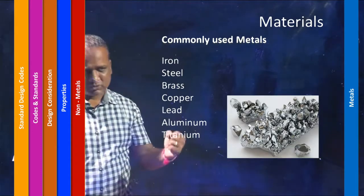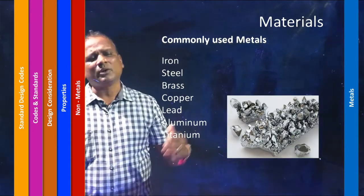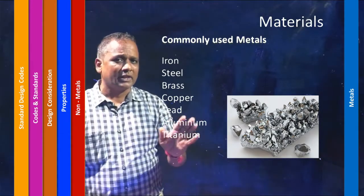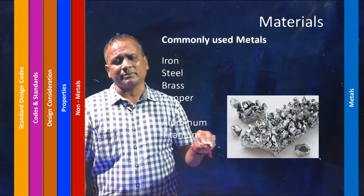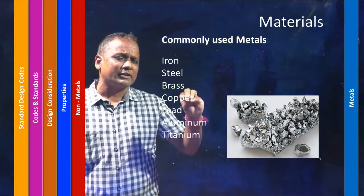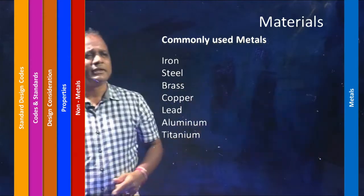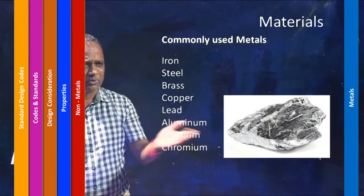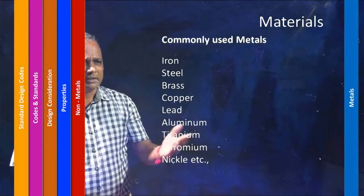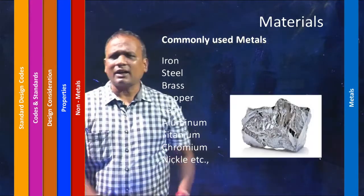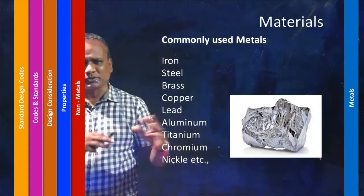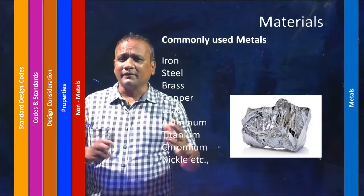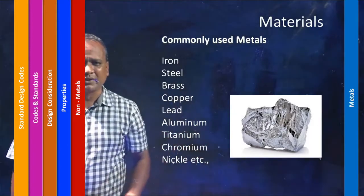Titanium, because of its hardness, is quite commonly added into materials to make composites. Composites are materials that have been combined together to tailor their properties. Other metals include chromium and nickel. Joining two metals together can turn out to be another composite or alloy material.